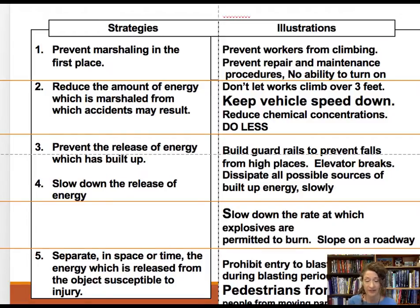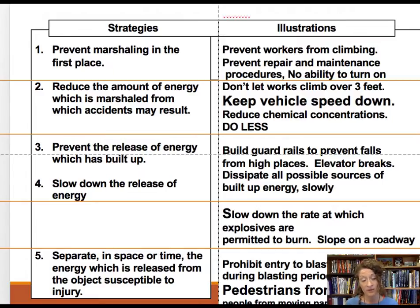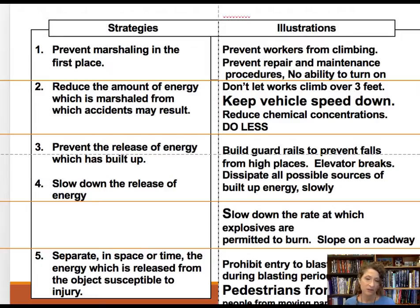Rule five is to separate the energy source or hazard in time or space. Examples include preventing entry into a blasting area during blasting, separating pedestrians from vehicles, separating workers from hazardous chemicals, or restricting only certain groups to hazardous areas. As it applies to lockout-tagout, we keep people away from moving parts.